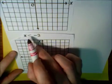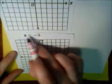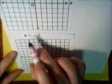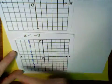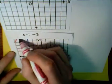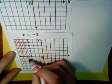And this says, x is less than negative 3. In other words, we want to shade values that are smaller than negative 3. Well, x is left-right. And less than is to the left. So, I'm going to shade to the left of my line.